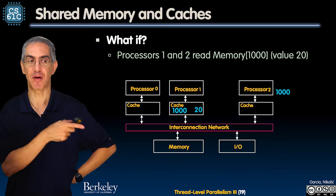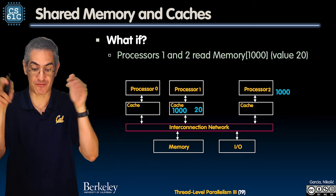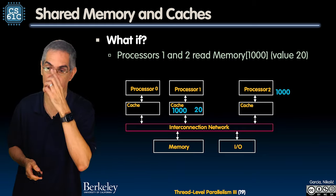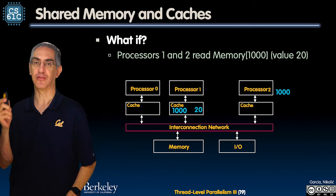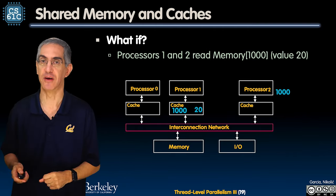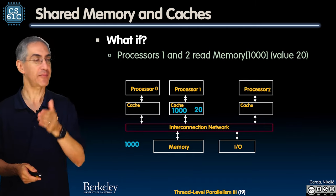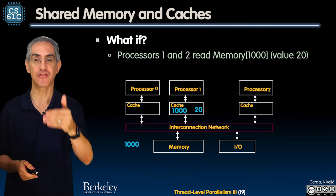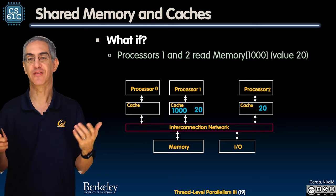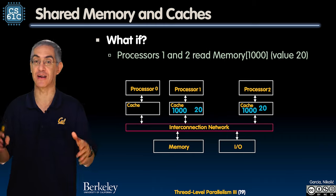You can already see there might be an optimization where processor two could look in processor one's cache, but they can only communicate through memory. So the same thing happens: processor two says I want to read memory at address 1000, checks the cache - not there - goes to memory, grabs it, comes back. Value 20 is there at address 1000. So far so good. Now each processor has a copy.